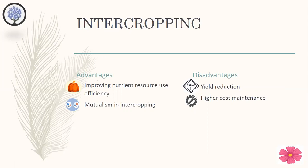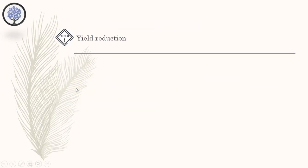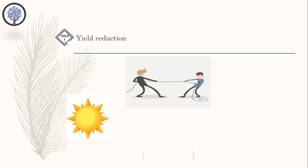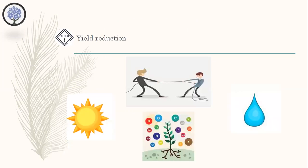Now I would like to explain the disadvantages. The first one is yield reduction. Intercropping can cause yield reduction of the main crop. The intercropping system will not reach as high a yield as the monocropping system, as there is competition among intercropping plants for light, nutrients and water. Yield reduction may be economically significant if the main crop has a higher market price than the other intercropping plants.